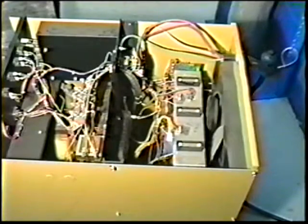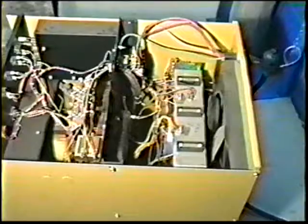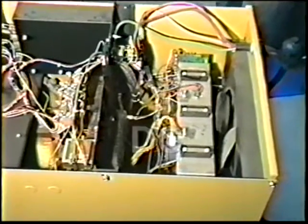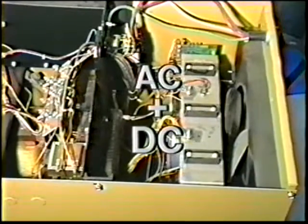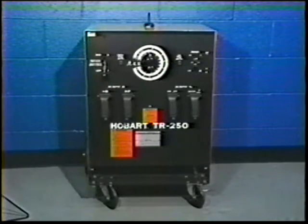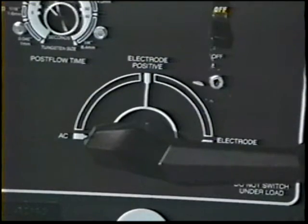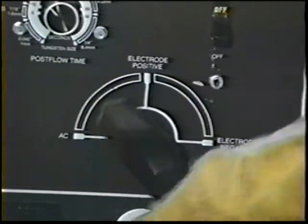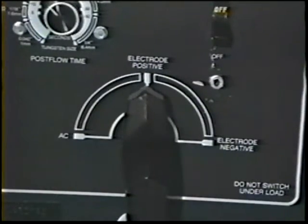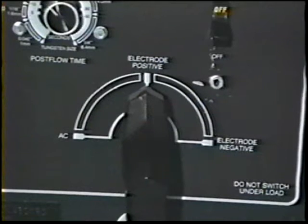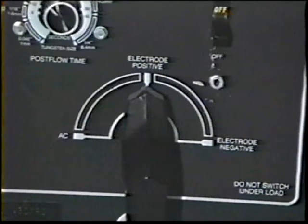By the addition of a rectifier to the transformer, both alternating and direct current can be produced. These transformer rectifier sources have a switch which allows the welder a choice of alternating current, direct current electrode negative, or direct current electrode positive, depending on the process and type of electrode.